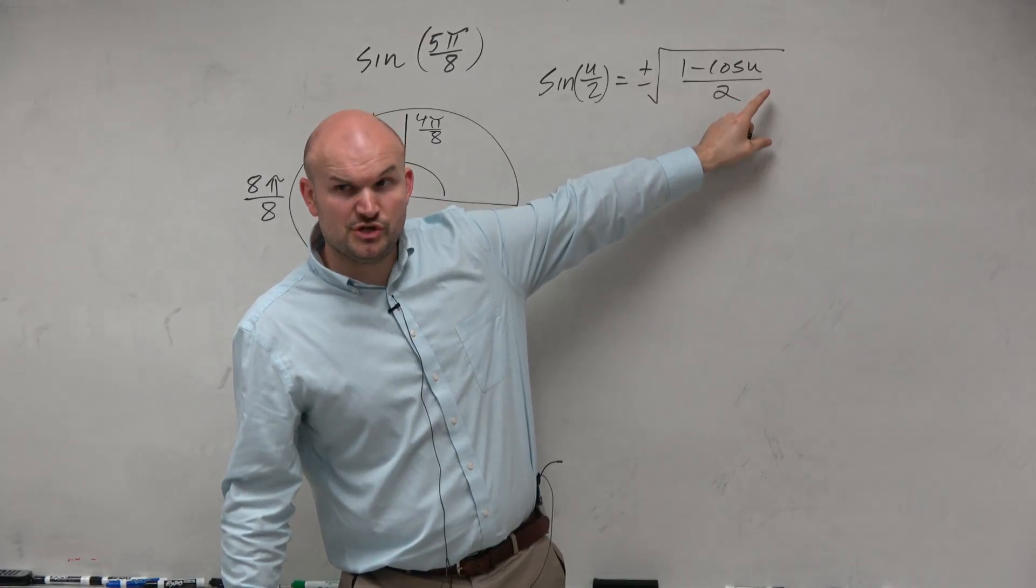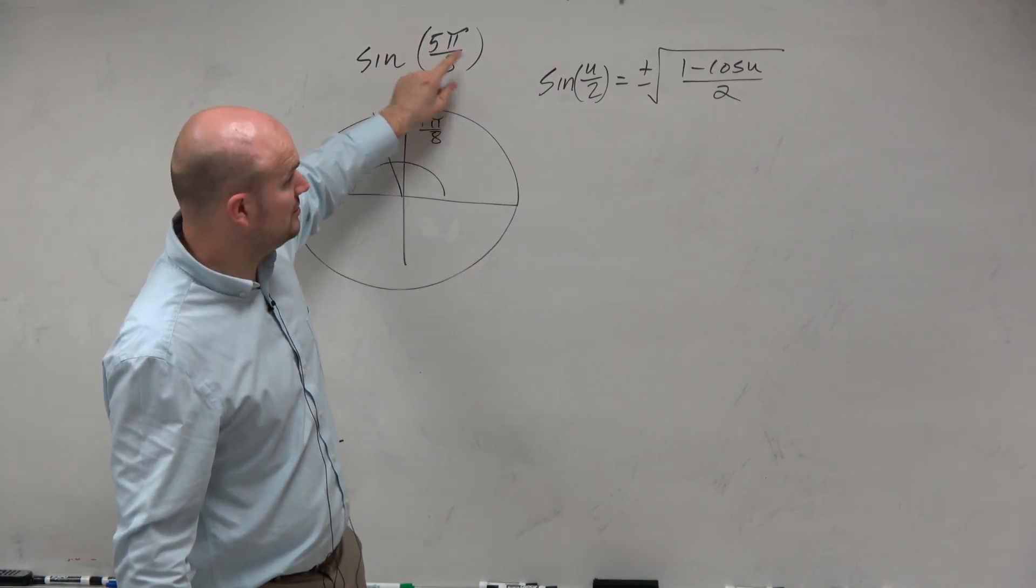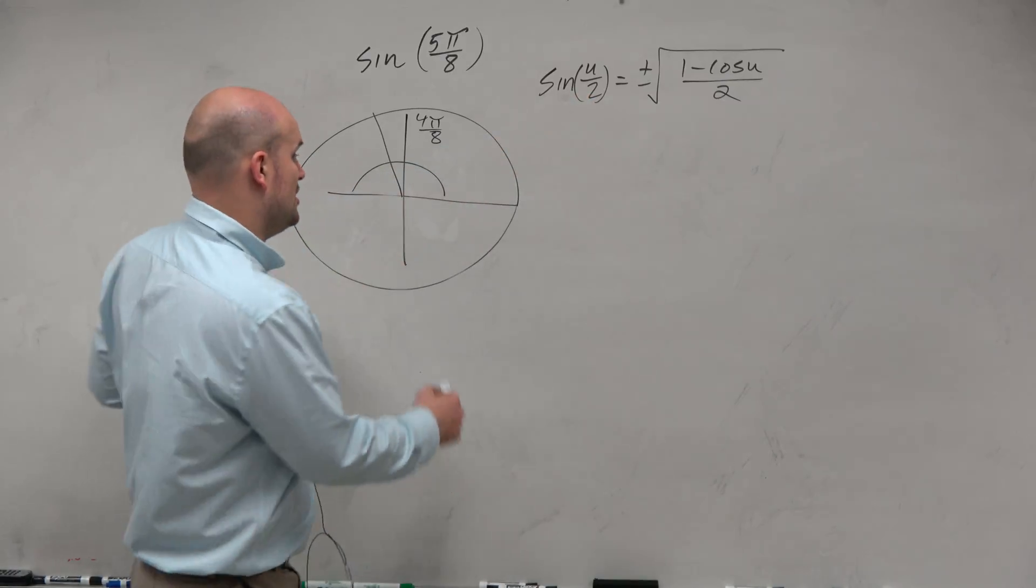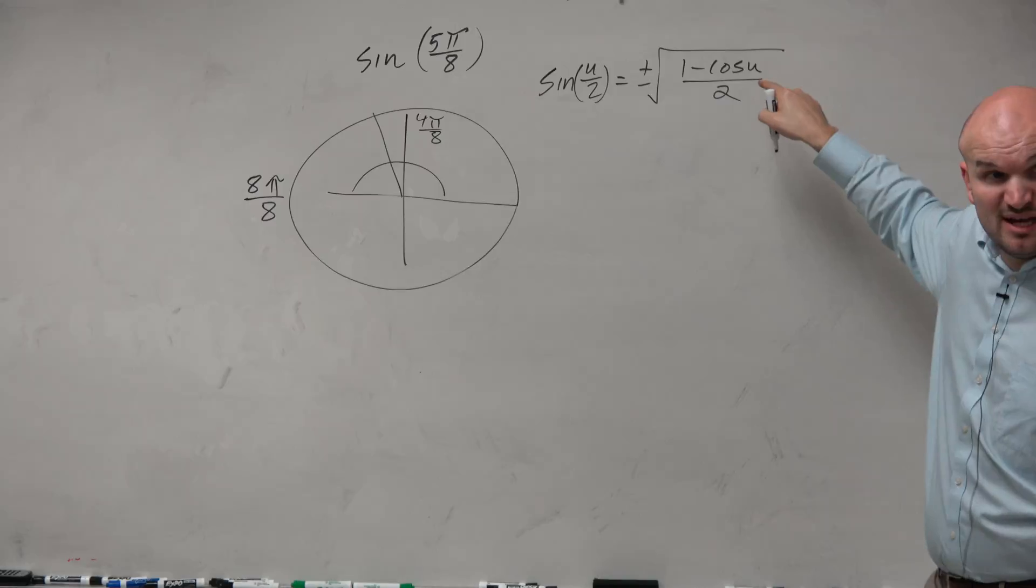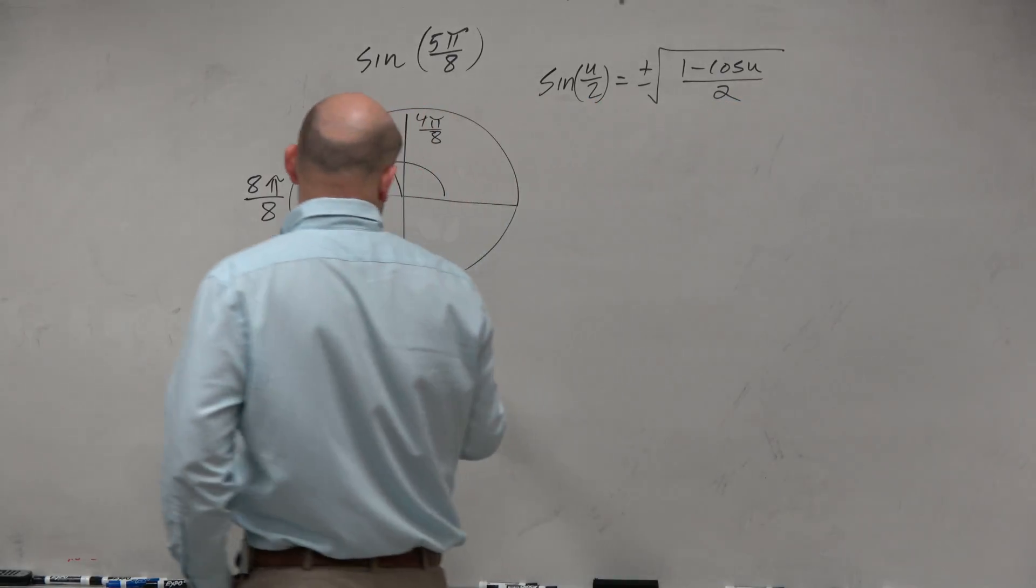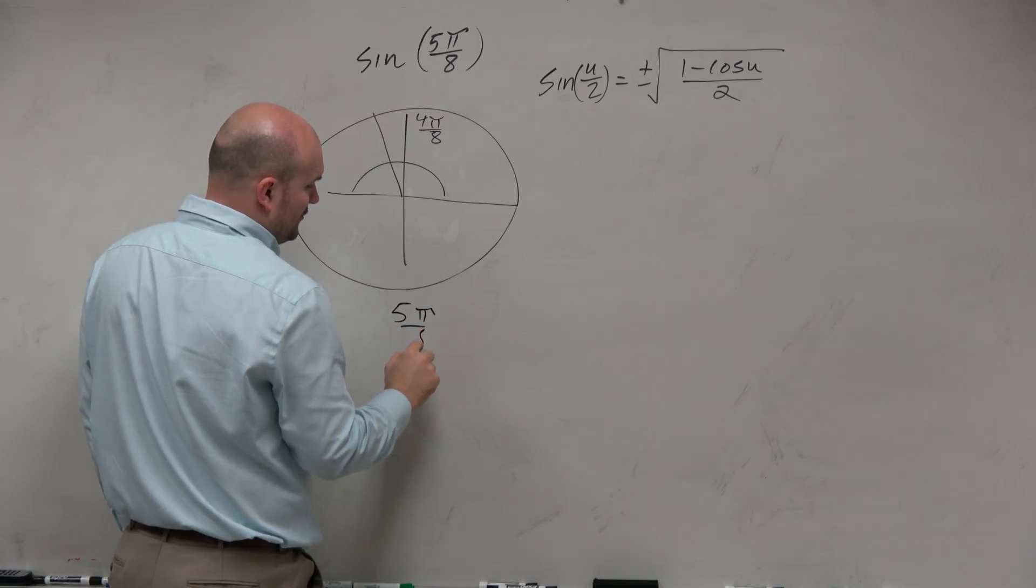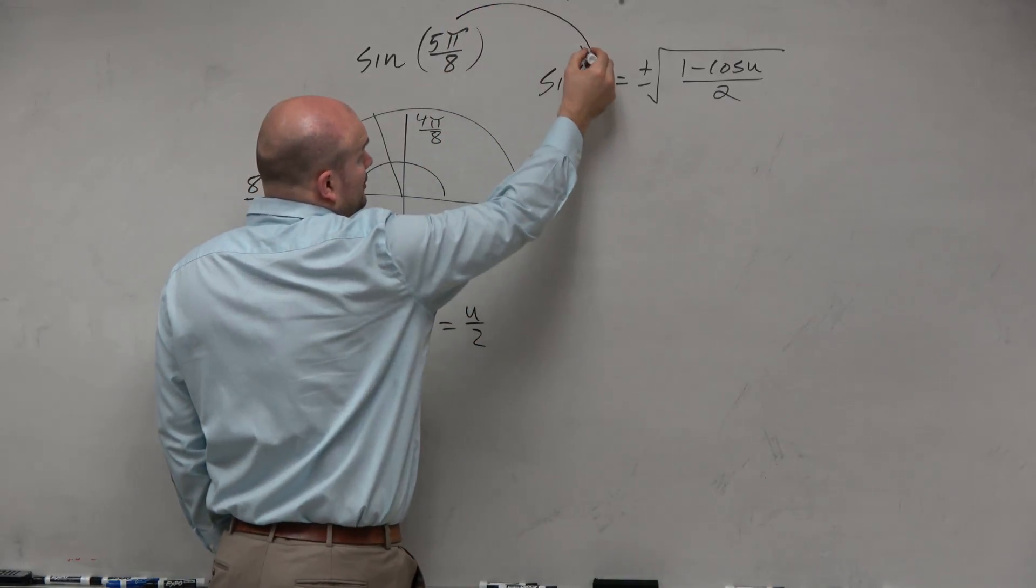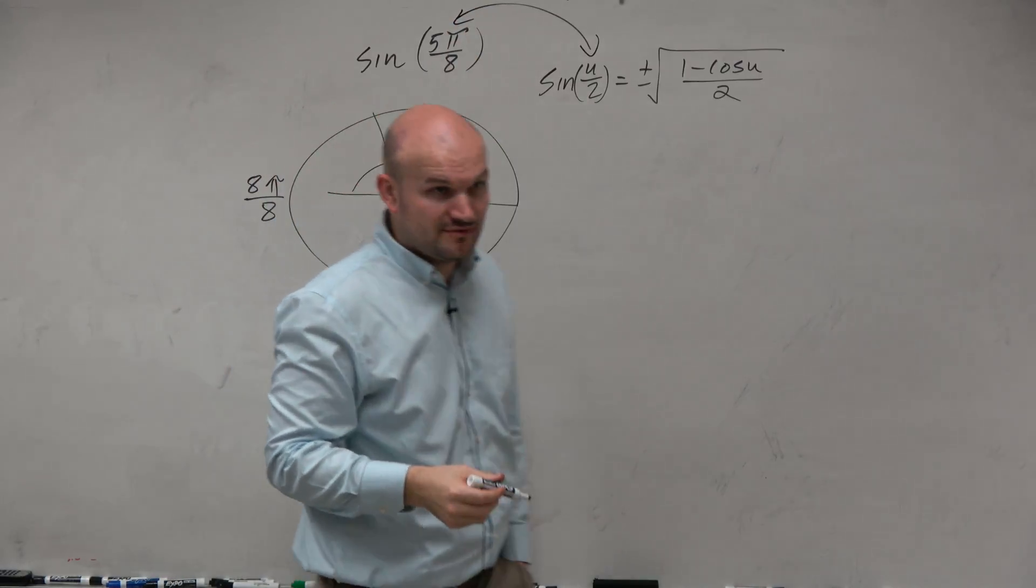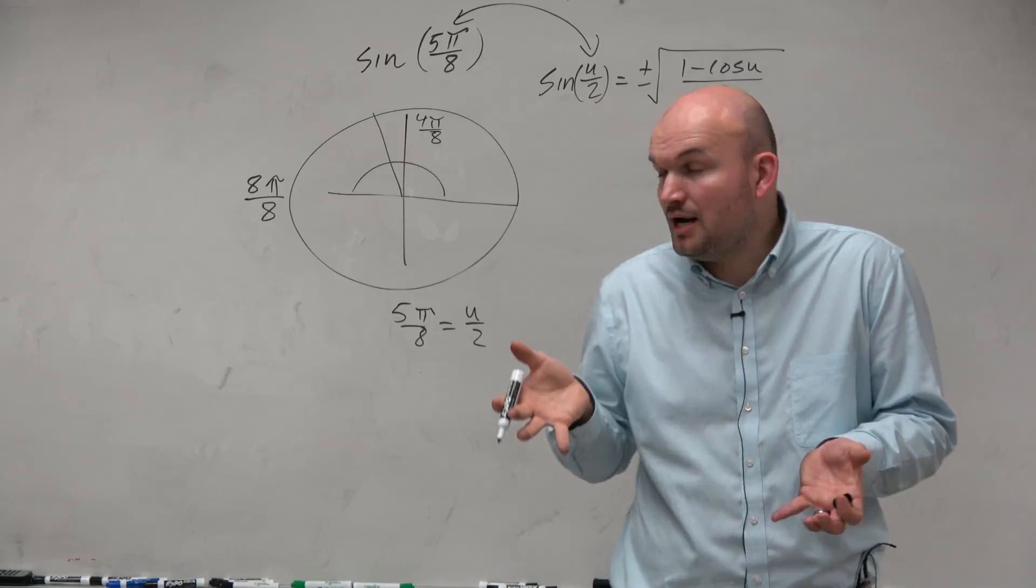But in the formula we use u. So what that means is 5π over 8 is equal to u over 2. But we don't want to use that angle in the formula. We've got to use u, so we've got to figure out what u is. So 5π over 8 is equal to u over 2. Would you guys agree that those two are in the same positions of the formulas?